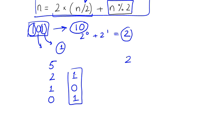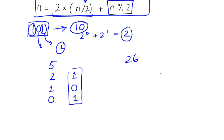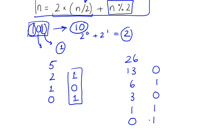Let's look at another example — 26. Divide that by 2, you get 13, remainder 0. Divide that by 2, you get 6, remainder 1. Divide that by 2, you get 3, remainder 0. Divide that by 2, you get 1, remainder 1. Divide that by 2, you get 0, remainder 1. And so this is your binary representation: 1, 1, 0, 1, 0.